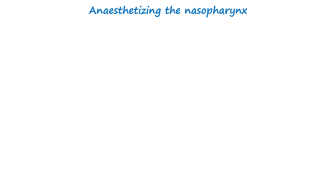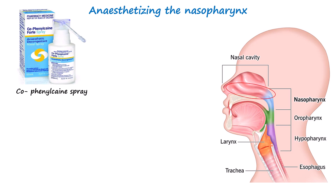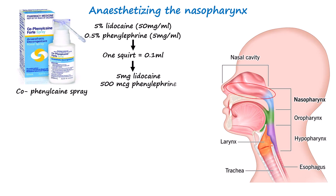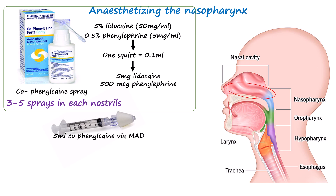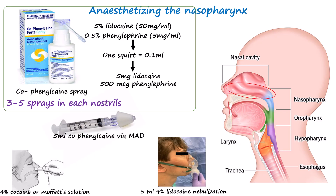For nasal topicalization, we used co-phenylcaine spray — that's lidocaine 5% (50 mg/ml) with phenylephrine 0.5% (5 mg/ml). Each actuation is about 0.1 ml, so one spray delivers around 5 mg of lidocaine and about 500 micrograms of phenylephrine. Usually 3 to 5 sprays go into each nostril. Alternatively, about 0.5 ml can be given through a mucosal atomizer device. Other options include 4% cocaine-soaked cotton, Moffett's solution, or nebulization of about 5 ml of 4% lidocaine or Moffett's solution given through a mucosal atomizer device.